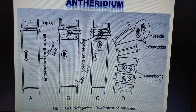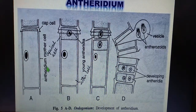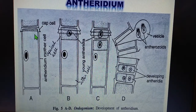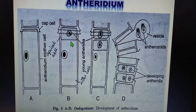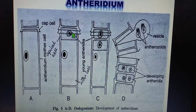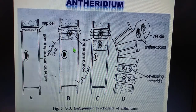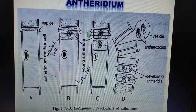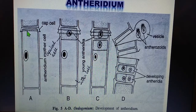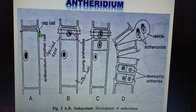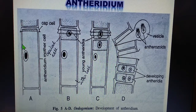Now let us look at the male gametes, that is the antheridium, and study the formation of male gametes. In macrandrous species, the antheridium forms terminal or intercalary antheridia — intercalary meaning in between the cells. These antheridia develop by the division of the antheridial mother cell. Any intercalary cell which has a cap cell can act as the antheridial mother cell.